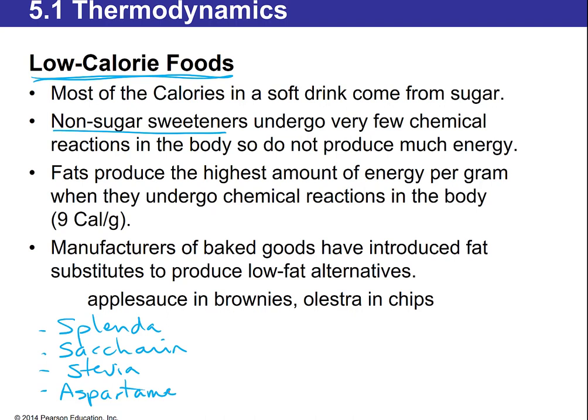Saccharin was apparently accidentally discovered as a chemical used in industry — someone tasted it and found it was really sweet. Artificial sweeteners trigger sweet receptors based on their molecular shape, though not for everyone. Some people find that artificial sweeteners taste bitter or have an aftertaste, like in Diet Coke. Some people get used to it over time.